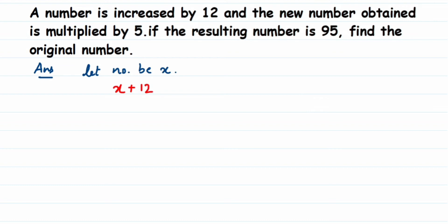x is the original number and we add 12 to get a new number. That new number is then multiplied by 5, and the resulting number is 95. So we write (x + 12) multiplied by 5 equals 95. This forms our linear equation. Now we just open the brackets and solve it.